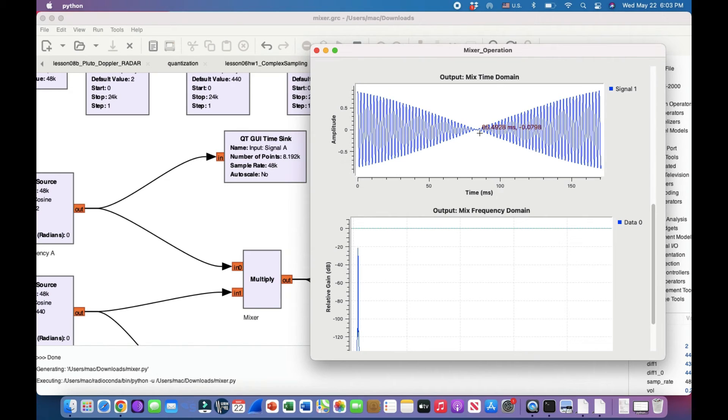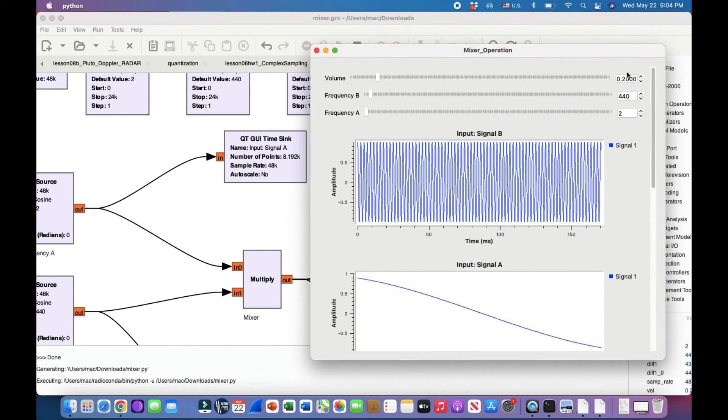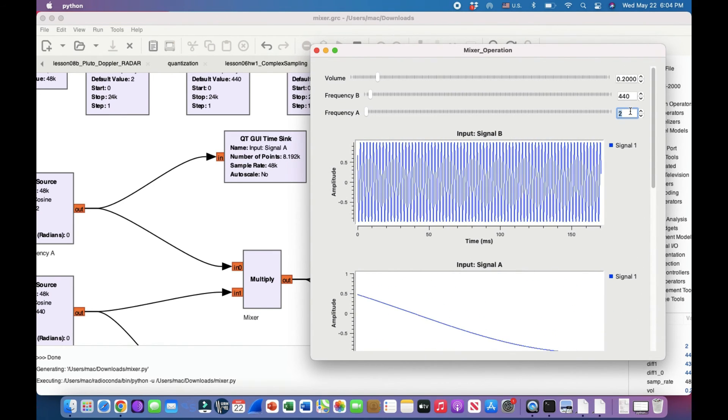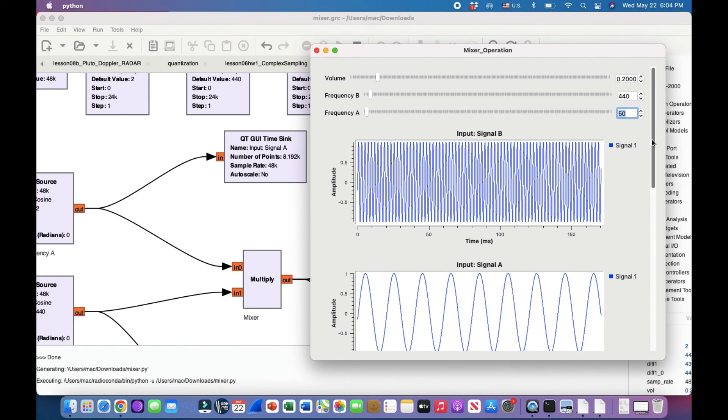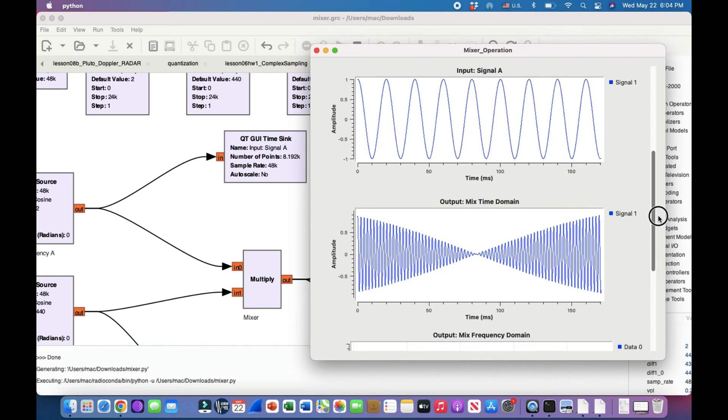Doesn't that look like an amplitude modulated signal? It is indeed an amplitude modulated signal, because an amplitude modulated signal we have fc plus fm and fc minus fm. Here exactly the same process is taking place: FLO minus FRF, FLO plus FRF. Exactly the same thing is happening. So here's the output spectrum. Let's visualize this spectrum a little bit more. I'm going to change this frequency to 50 hertz so I can clearly see this.